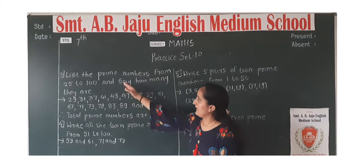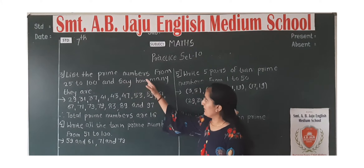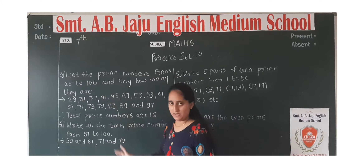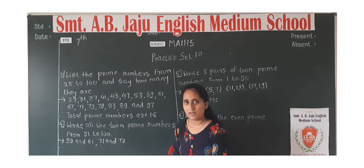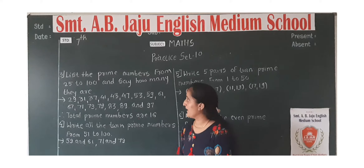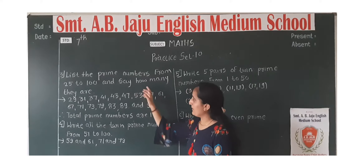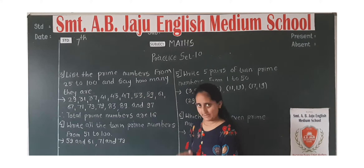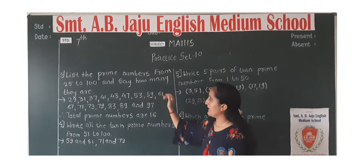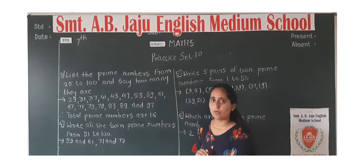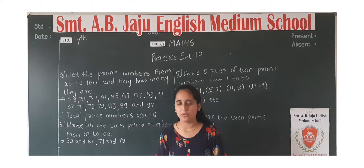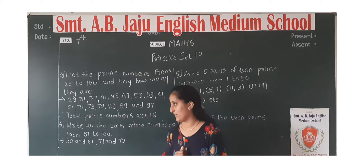See, list the prime numbers from 25 to 100. Hame kya karna hai — 25 to 100 ke beech jitne bhi prime numbers hain uski list banana hai, and say how many. Aur kitne hain voh bhi count karna hai. Toh chalo shuru karte hain.